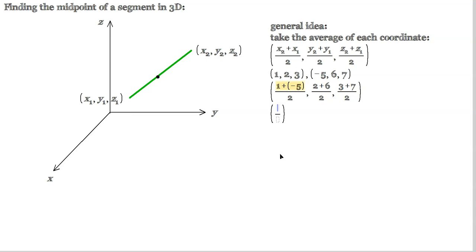So then you work out each value. So 1 plus negative 5 is 1 minus 5, which is negative 4 over 2. This would be 8 over 2. And this would be 10 over 2. That's skipping steps. So lastly, we would have negative 2 as the x-coordinate of the midpoint, 4 as the y-coordinate of the midpoint, and lastly 5 as the z-coordinate of the midpoint.